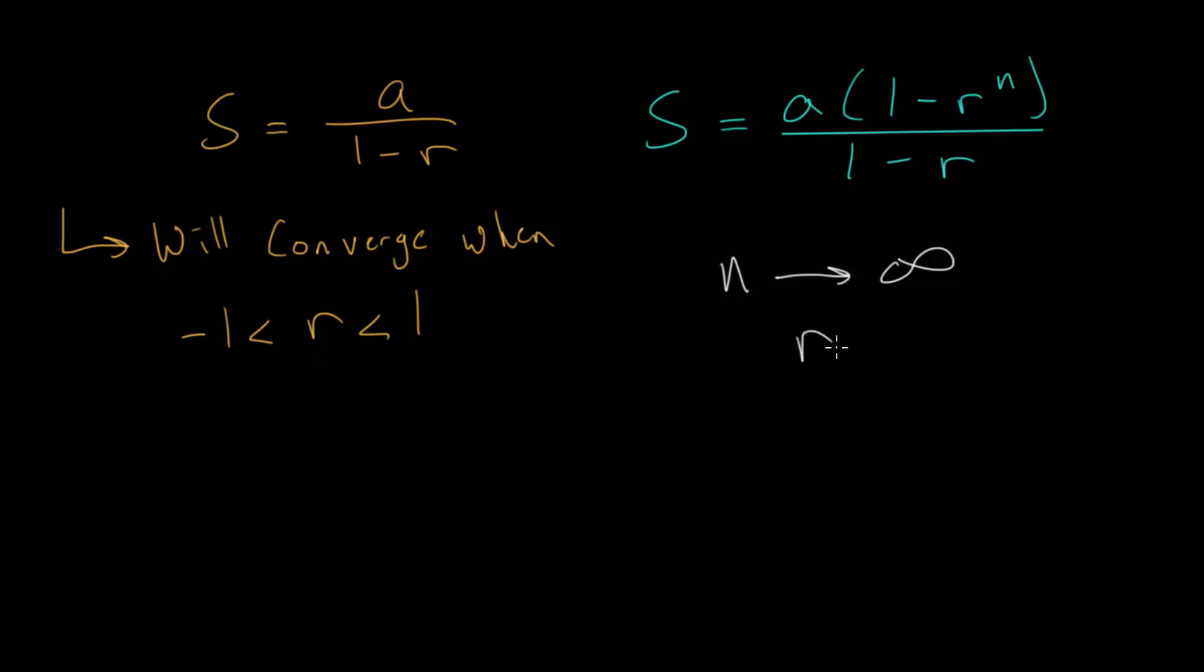But for this to happen, we need this condition. We need r, or we can say the absolute value of r, to be less than one. So it has to be a fraction. And basically, we're thinking about this term up top here. And what happens as r to the n, the nth power, changes as n gets bigger and bigger.